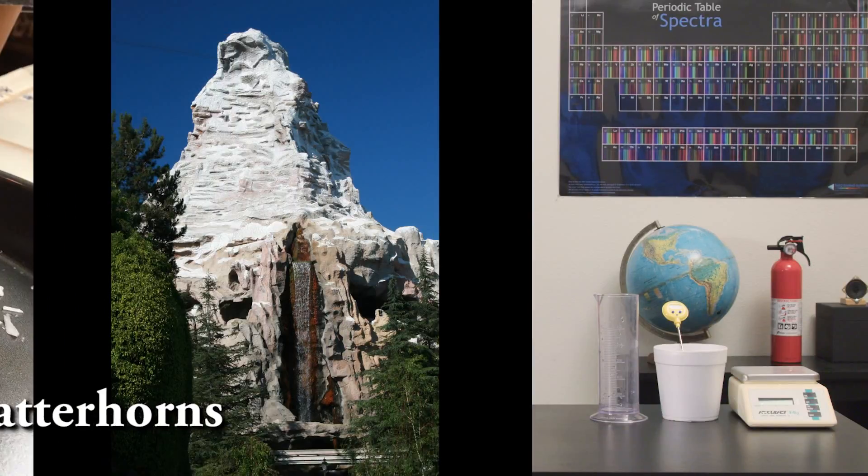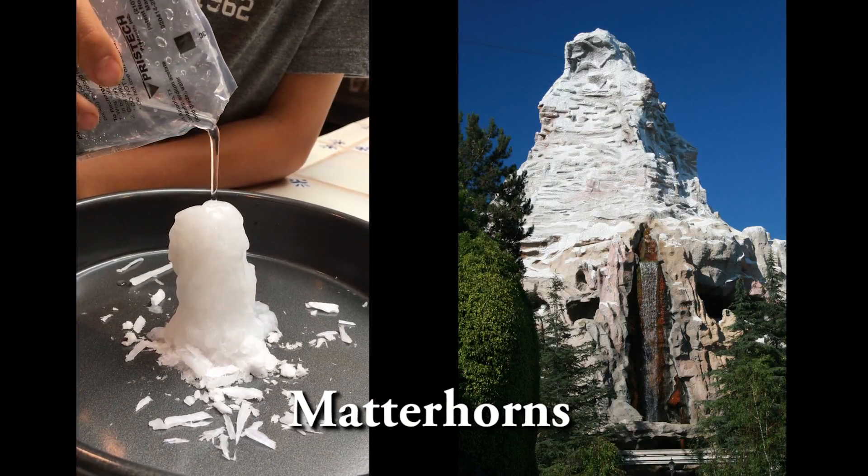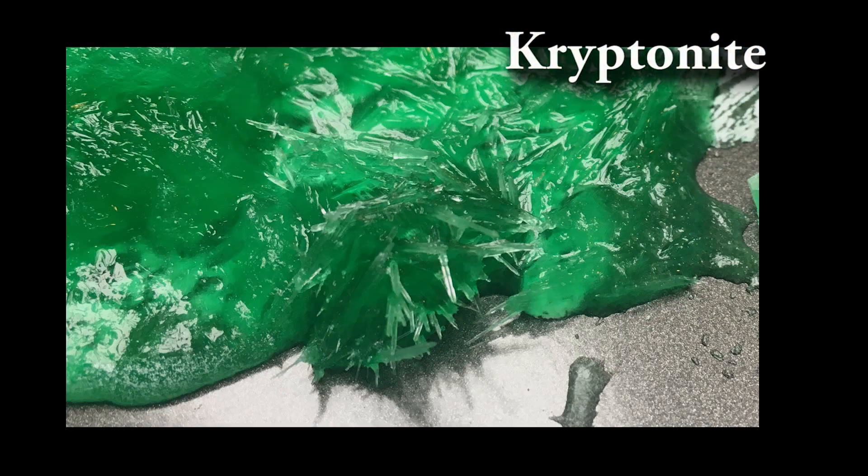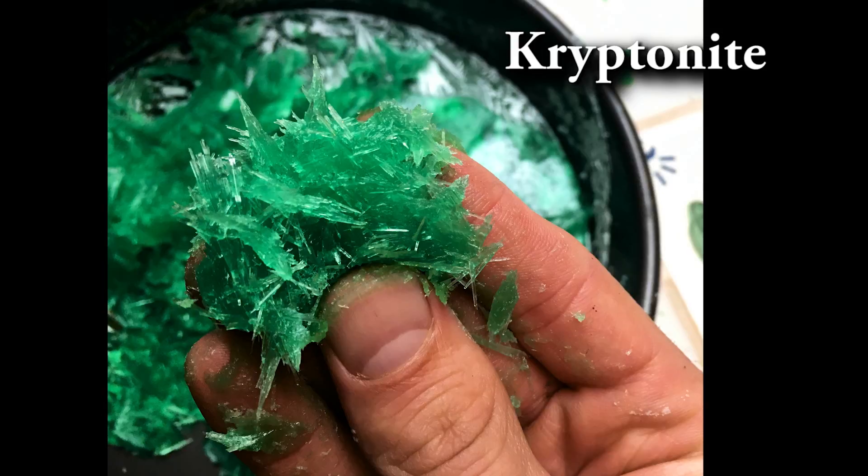Other fun experiments are to make matterhorns of sodium acetate or kryptonite crystals by adding food dye. The instructions for this are found in the article linked below.